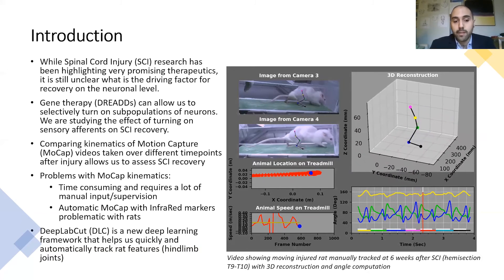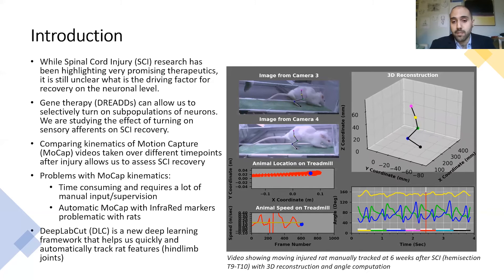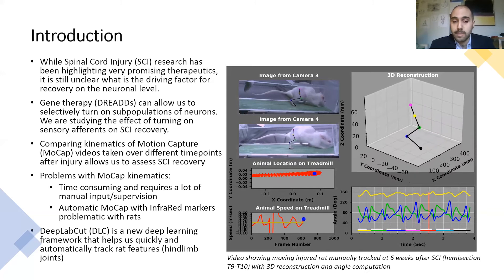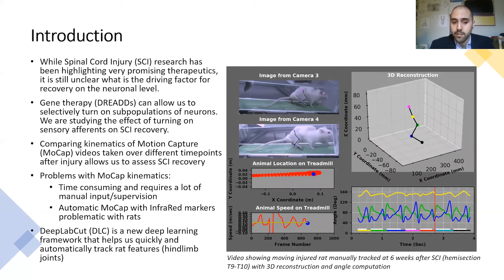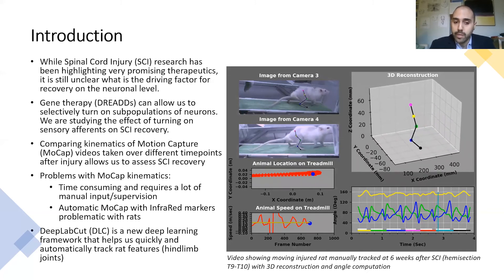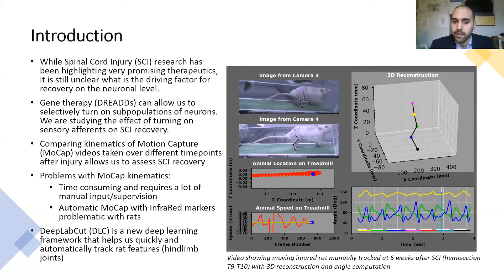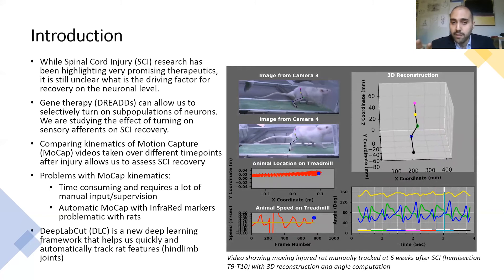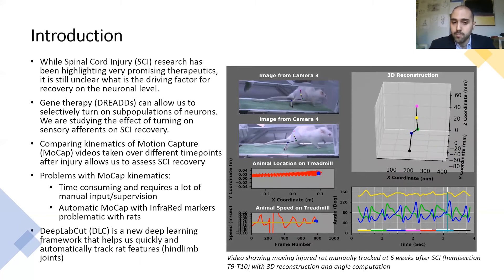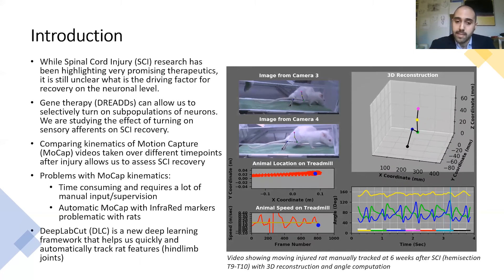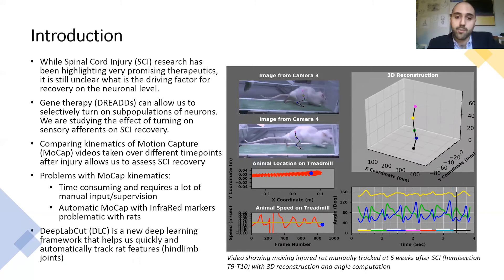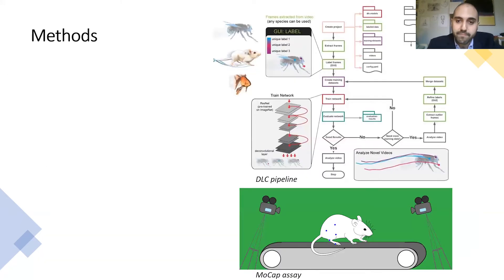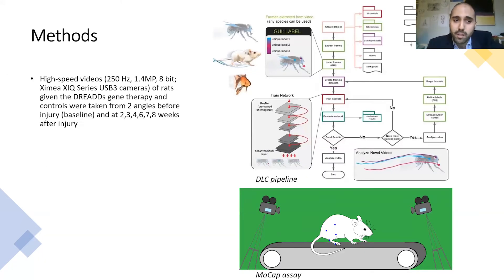By using DeepLabCut, which is a new deep learning framework that uses computer vision, we can quickly and automatically track rat features that are moving. In this case, we are interested in tracking hind limb joints.